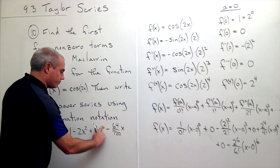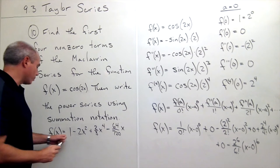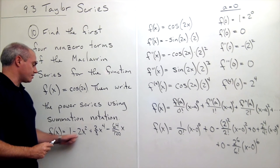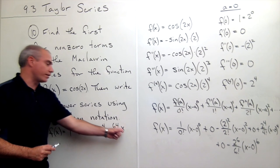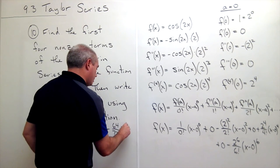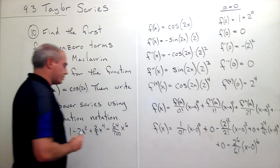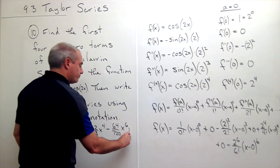I wrote x cubed there — it should have been x to the fourth. I'm sorry. So we should have x to the zero, x squared, x to the fourth, x to the sixth, and so on.